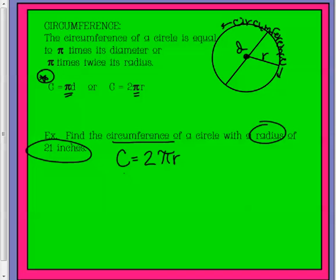You're going to take C equaling two times pi, which we know to be 3.14, and if you don't know that, write that down, times your radius of 21.